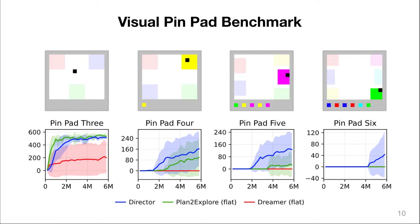We also introduce a simpler benchmark called Visual Pin Pad that allows us to evaluate sparse reward performance without the complexity of 3D perception. Here, the agent controls the small black dot by moving small steps in all four directions, and the agent can step on the colored pin pads to activate them.